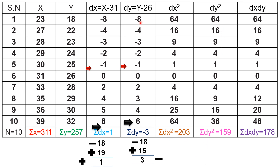Now calculate dy²: 8² = 64, 4² = 16, 3² = 9, 2² = 4, 1² = 1, 0² = 0, 2² = 4, 3² = 9, 4² = 16, 6² = 36. Adding these values gives sigma dy² equals 159.